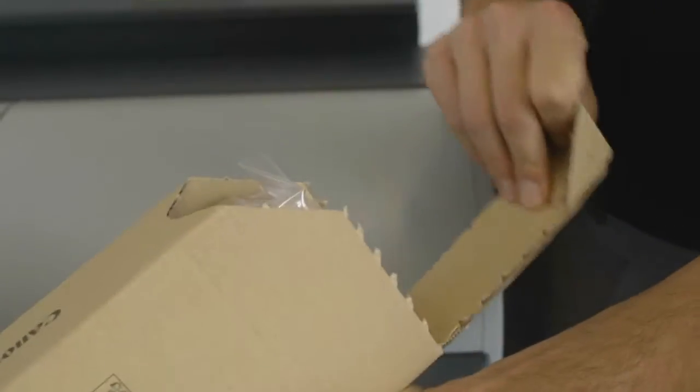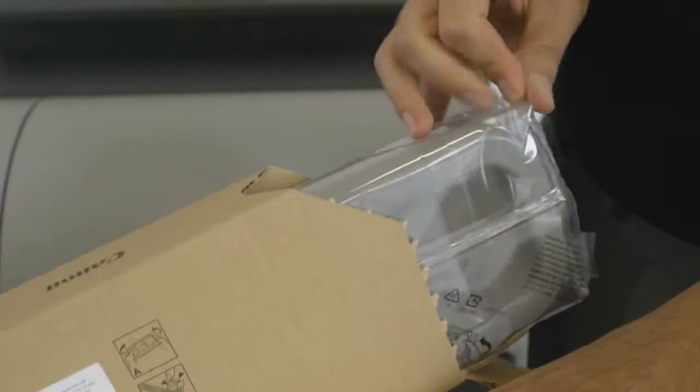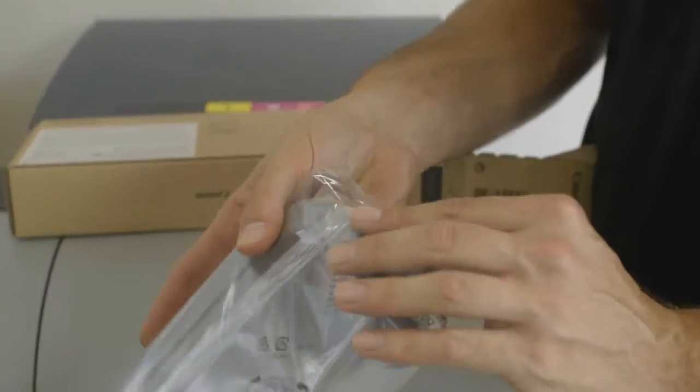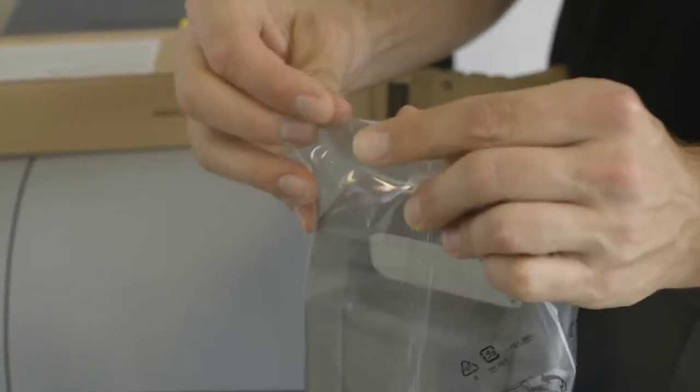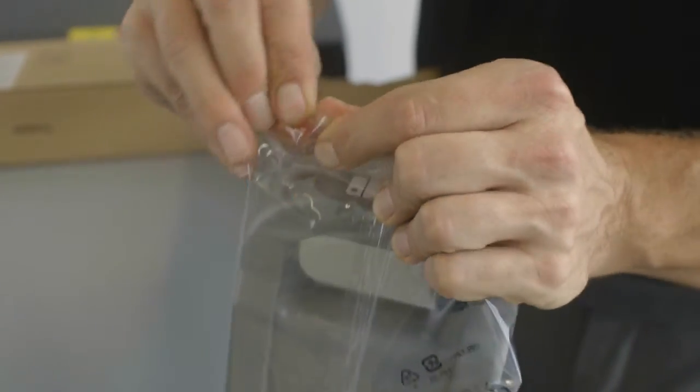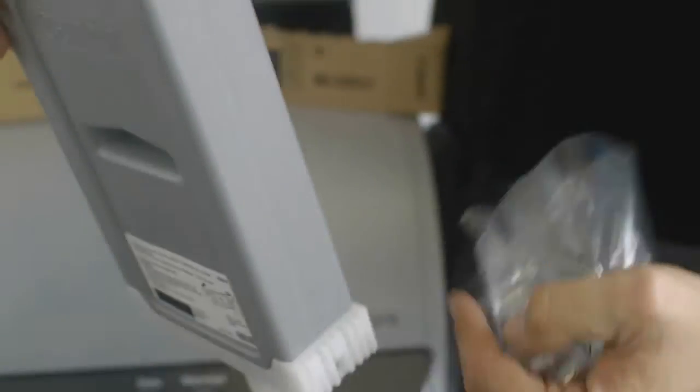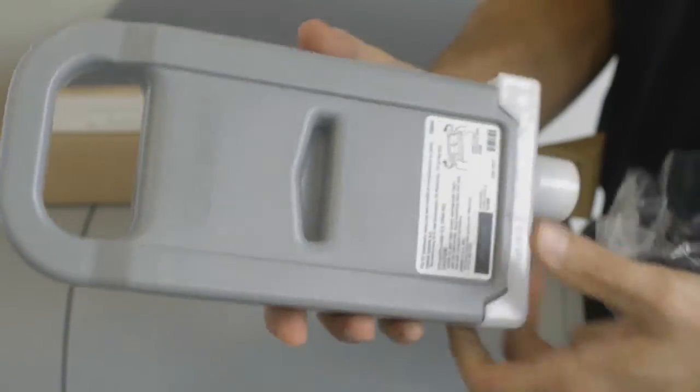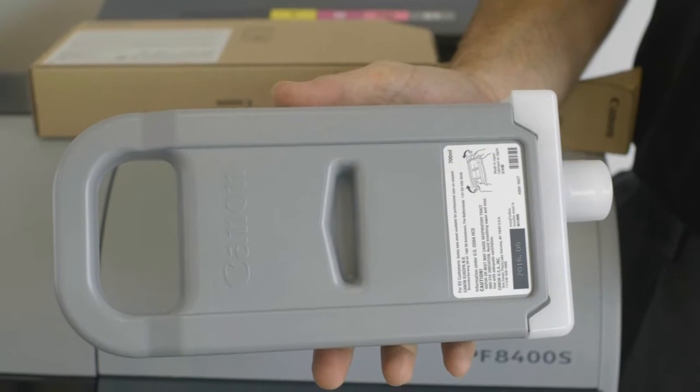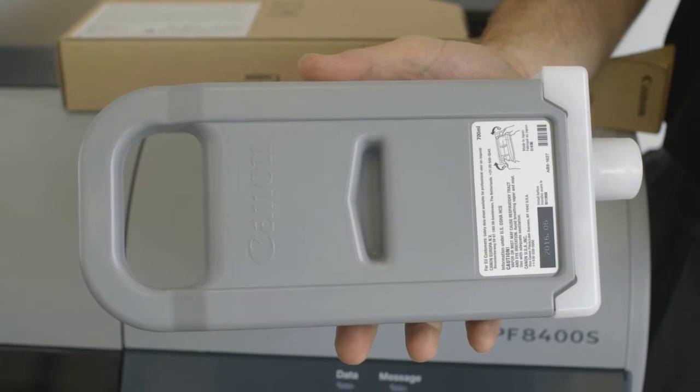Now remove the new ink tank from the packaging. There's a small tear tab here to make it easy to remove the plastic bag. Ink tanks are available in either 700ml or 330ml quantities for some colors. This is a 700ml ink tank.